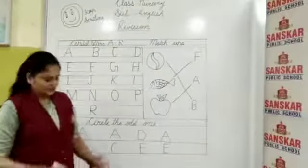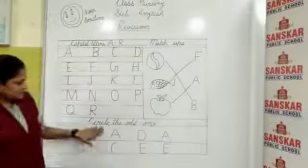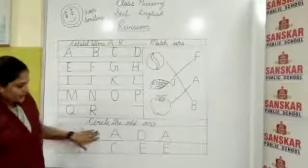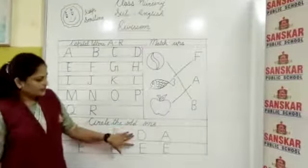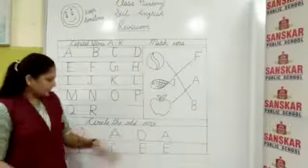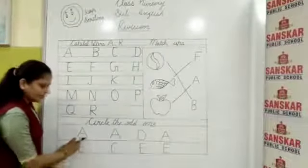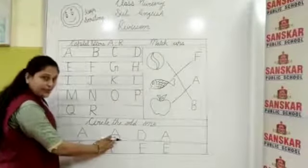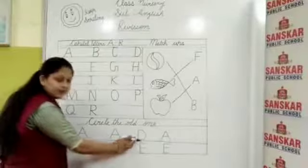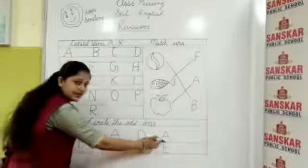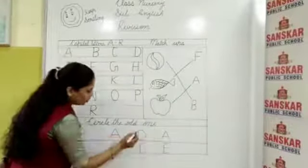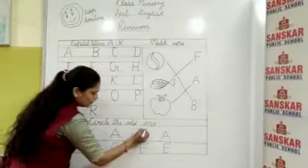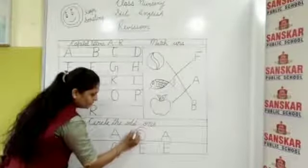Is that clear? Now next is circle the odd one. What do we have to do? Here the letters we have learned, in this whichever is different, we have to circle it. Okay? So look at here, this one is capital letter A, again A for apple, A for apple. This one is D for dog. And this is again A for apple. So in these letters the different one is D for dog, so you have to make a circle on D for dog.